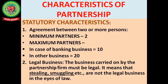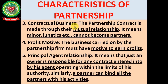The next characteristic is legal business — the business carried on by the partnership firm must be legal; stealing or smuggling are not legal in the eyes of law. Next is contractual relationship — the partnership contract is made through mutual relationship, which means minors or lunatics cannot become partners in the partnership firm.